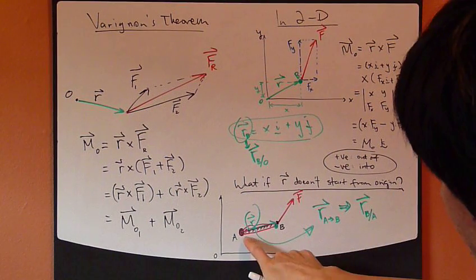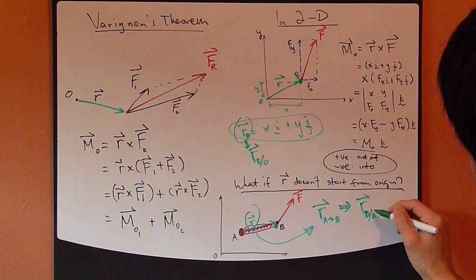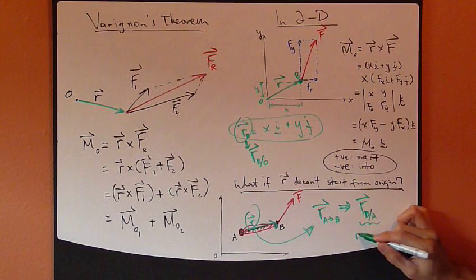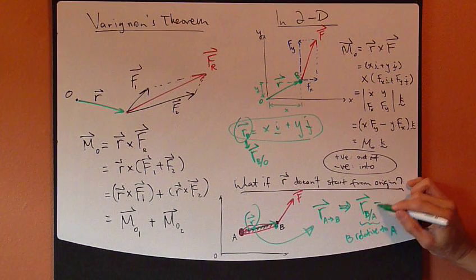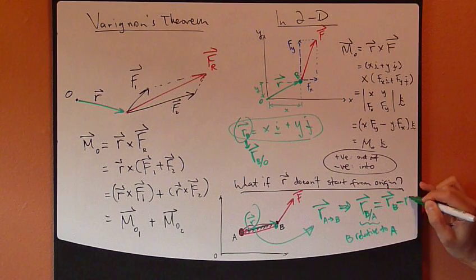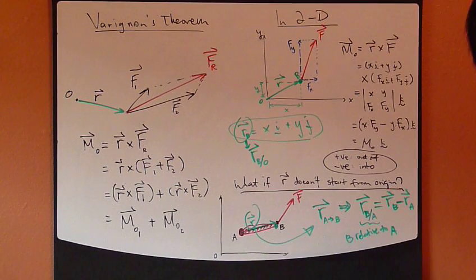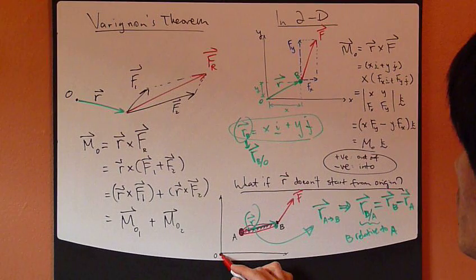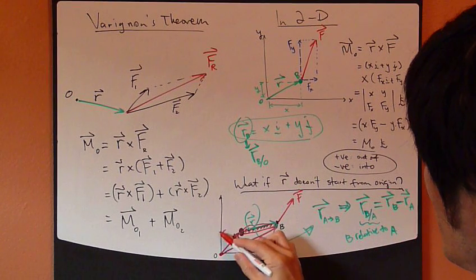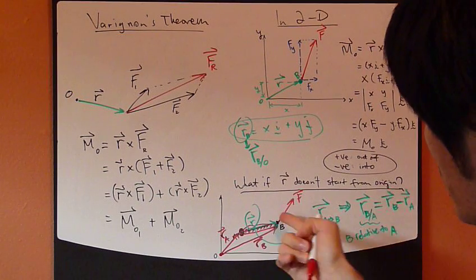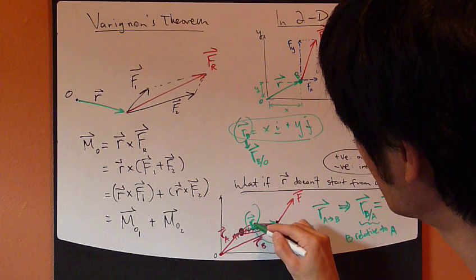In this case, however, this point A is not origin. So let's write R vector of point B slash A. So this is B relative to A. And this is exactly equal to R of B minus R of point A. So this vector minus this vector, which means R of B is measured from O. So this right here. So this is R_B minus R_A. R_A is this guy right here. So this vector minus this vector gives you this R_B/A, which is exactly this right here. So this is R_B/A.